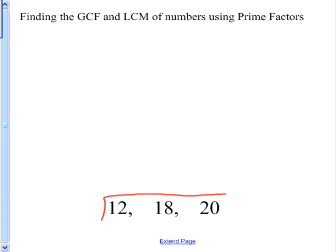Again, what's the smallest prime that goes into these three numbers? That's 2. 2 goes into 12 6 times, into 18 9 times, and into 20 10 times.